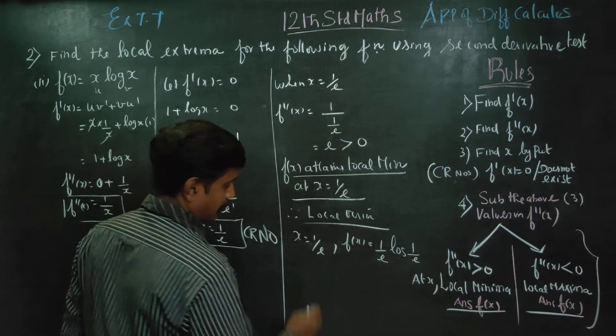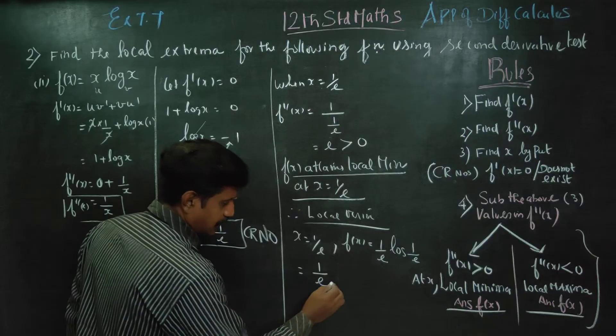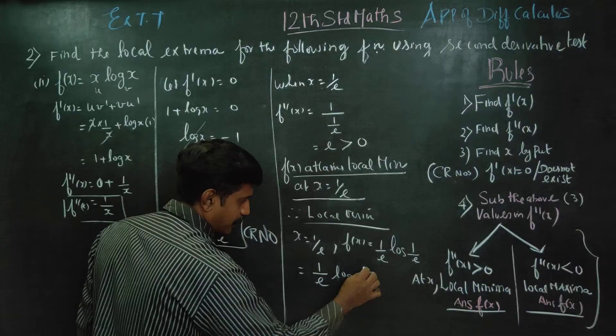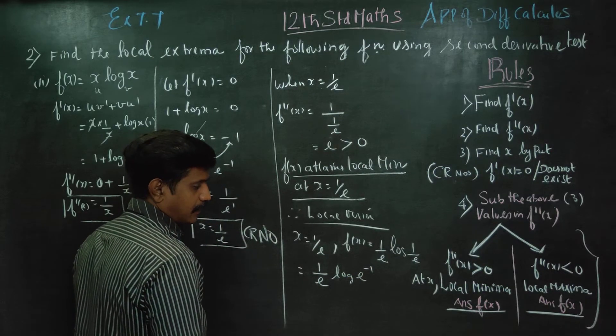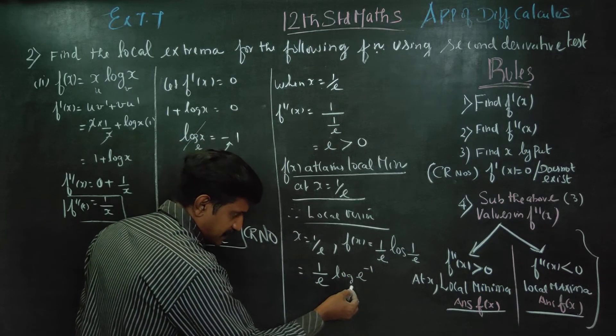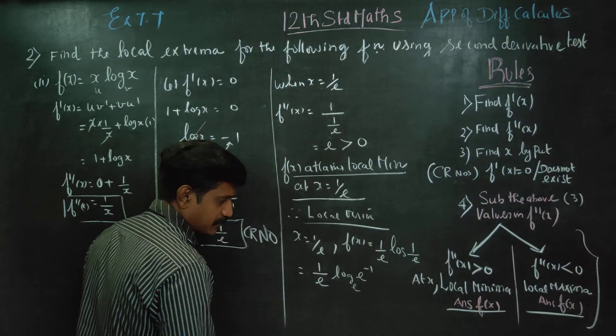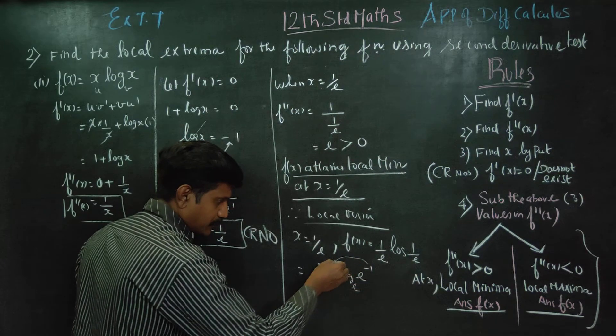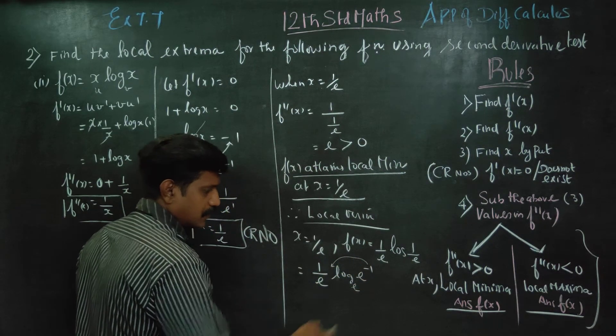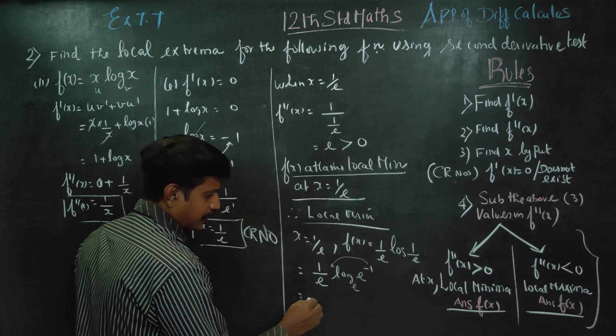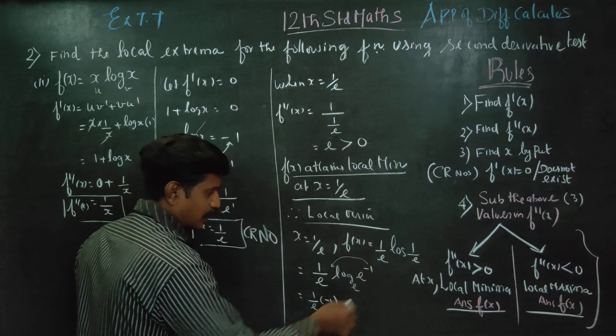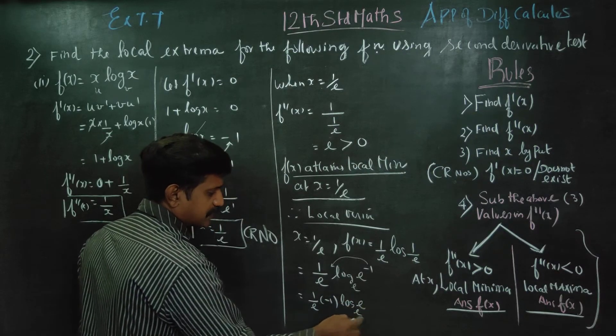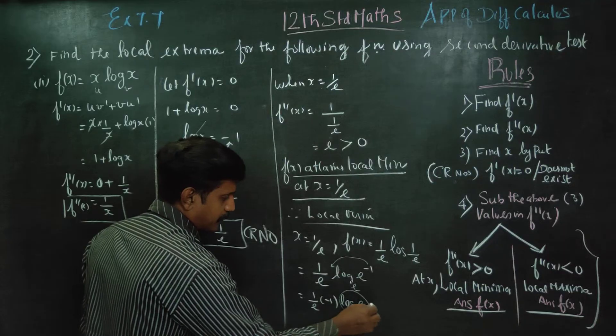1/e can be written as e^(-1). Using the power rule, the exponent is -1. So we have (1/e) × (-1). Log e to the base e equals 1.